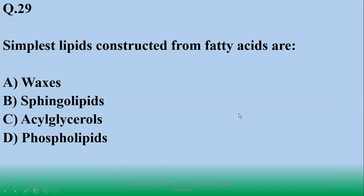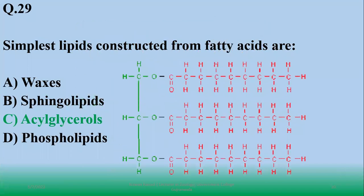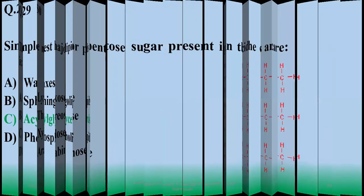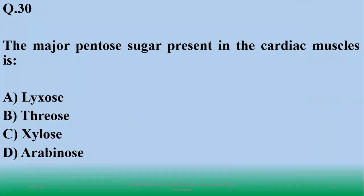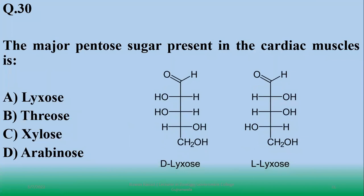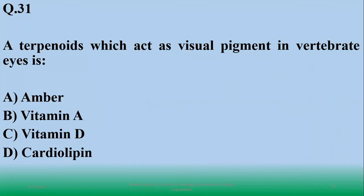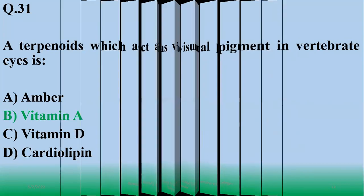Simplest lipids constructed from fatty acids - they are triacylglycerols or acylglycerols, fats and oils. The major pentose sugar in cardiac muscle - it's xylose, a pentose sugar, option A. The carotenoid which acts as a visual pigment in vertebrate eye is retinol, vitamin A. So B is the right option.